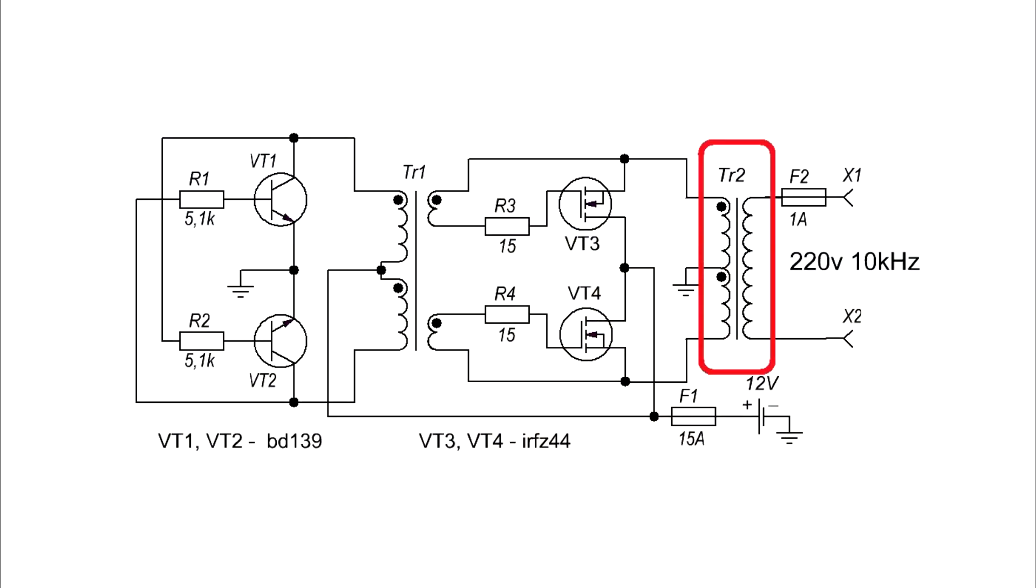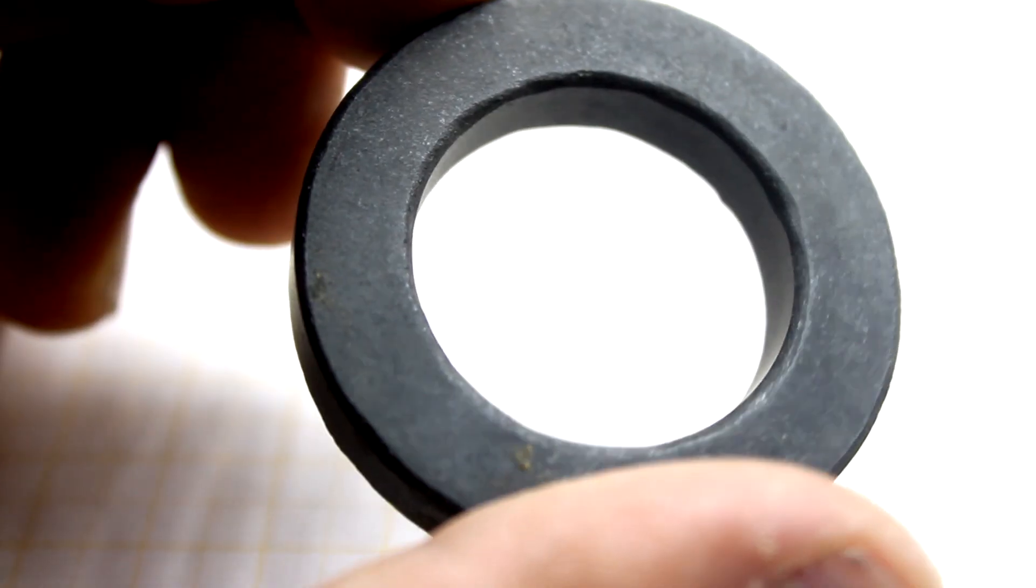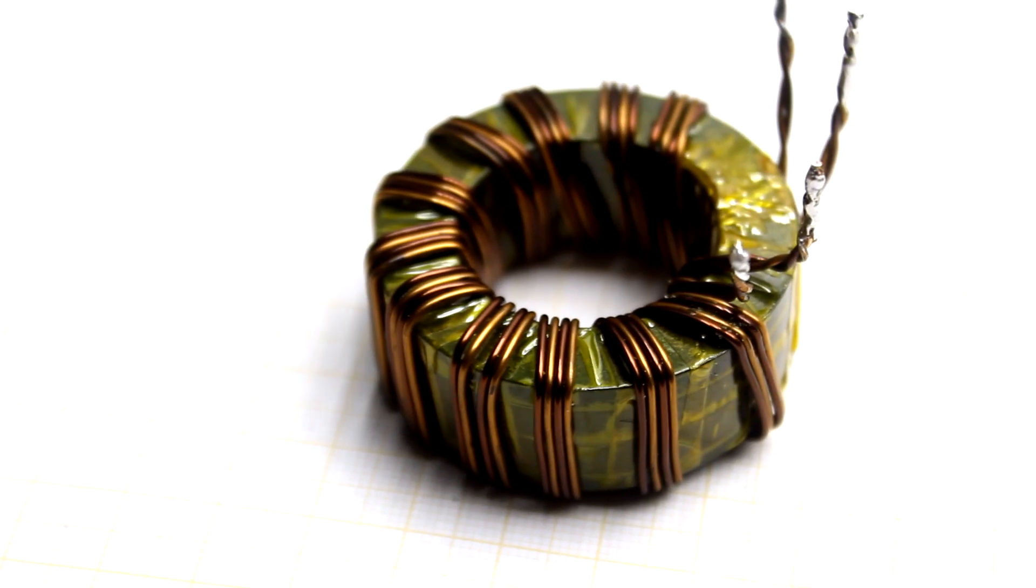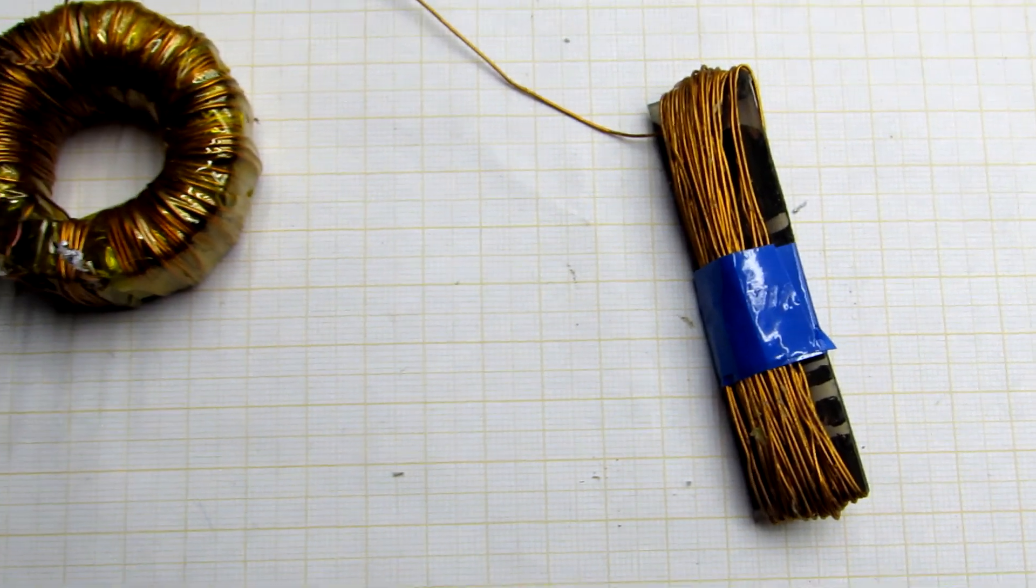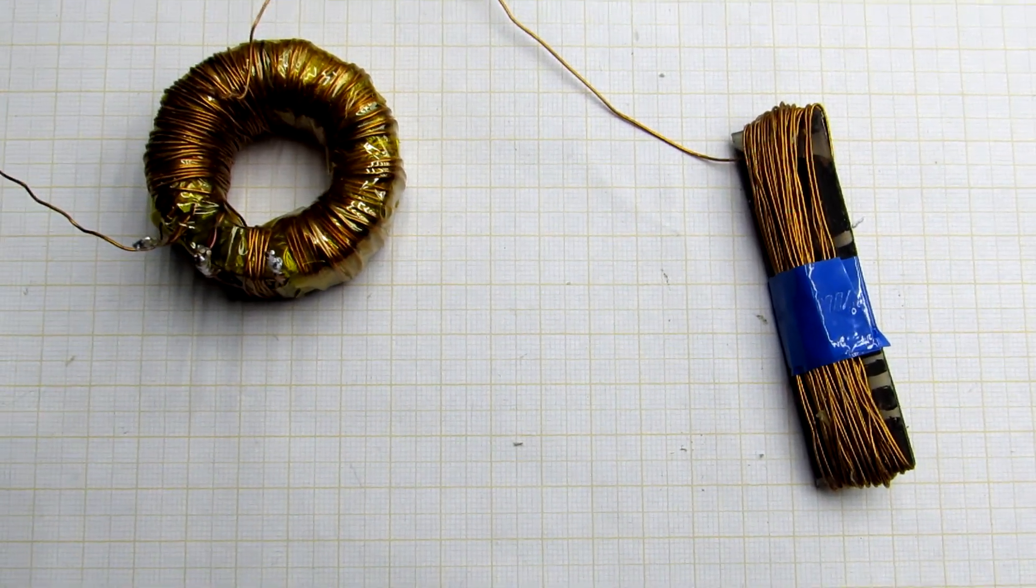A couple of words about the power transformer. About the core and parameters of the primary winding, I told in the first part. The secondary winding in my case is wound by a wire of 0.5mm and contains 220 turns.